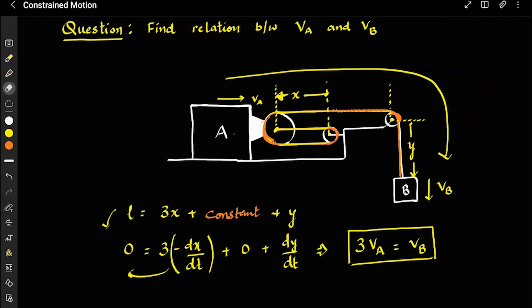Similarly, if they are starting from rest, we get the same relation for acceleration, which is more important in Newton's laws of motion. So 3aA = aB — that is the relation between accelerations of A and B.